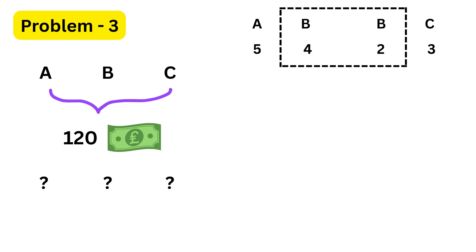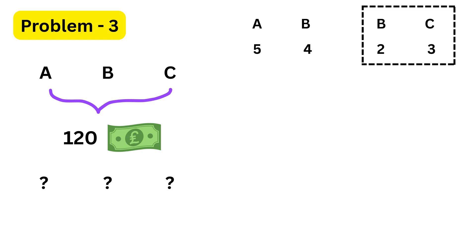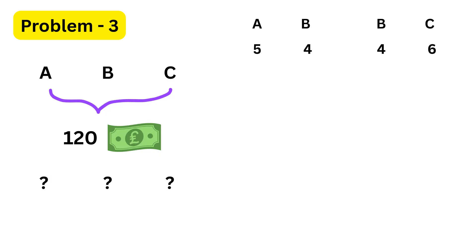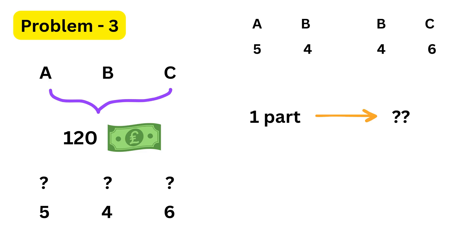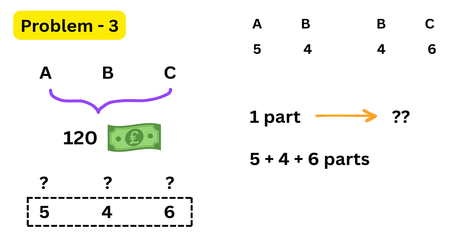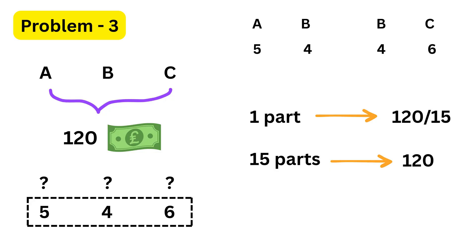Once again, B appears in both ratios, so that's our connection point. In the first ratio, B is four parts. In the second ratio, B is two parts. To make them the same, we multiply the second ratio so that B also becomes four. If we double the second ratio, B becomes four and C becomes six. So we get A to B to C equals five to four to six. The total amount shared is one hundred and twenty pounds. Adding up the parts: five plus four plus six equals fifteen parts in total. One hundred and twenty divided by fifteen gives us eight, so one part equals eight pounds.